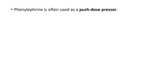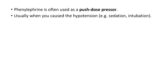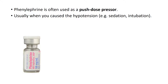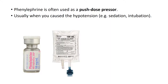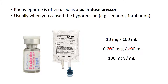With push-dose pressers, phenylephrine is the classic one we use for this — it's the one you'd use when you have caused the hypotension, like via procedural sedation or intubation. You mix this up by taking the vial of phenylephrine, which has 10 milligrams in it, drawing up the whole thing, and putting it in a 100cc mini bag of saline. If you get 10 milligrams in 100 mils, that's 10,000 micrograms in 100 mils, which works out to 100 micrograms per mil. The usual dose is 100 to 300 micrograms, so you squirt in 1 to 3 mils — usually enough to bring their blood pressure back up while whatever you just gave starts to wear off.